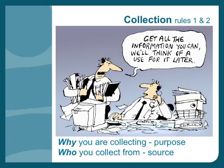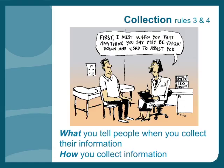And now to Rules 3 and 4. These rules regulate what you tell people when you collect their information and how you collect it. Rule 3 says that when you collect information directly from a person, you need to tell them what you're doing, why, and who's going to see it — transparency. Rule 4 says when you're doing that collection, you've got to be professional. You can't collect information by means that are unfair, unreasonable, or unreasonably intrusive. Rule 4 might come up in a health context when you're collecting health information from somebody about a sensitive matter and other people can hear them.